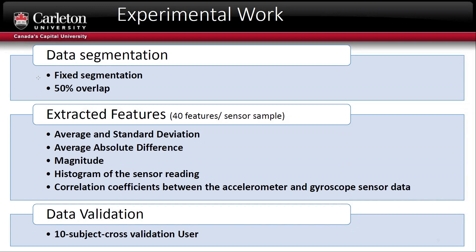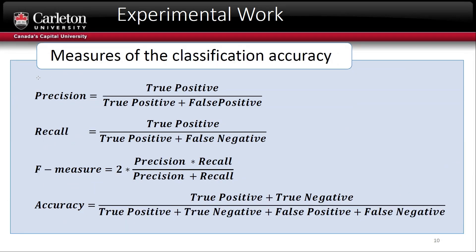For this work, we used fixed segmentation. We started with four seconds and reduced it to one second, with 50% overlap between segments. We extracted about 40 features for each sensor sample per segment. For data validation, instead of the traditional K-fold cross-validation, we used 10-subject leave-one-out validation, where the system is tested on data from a new subject unseen during training. This ensures the system is platform independent and avoids overfitting. We measured classification performance using precision, recall, and F-measure, not just accuracy.